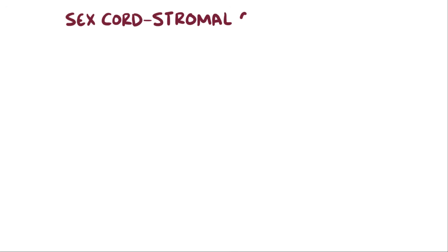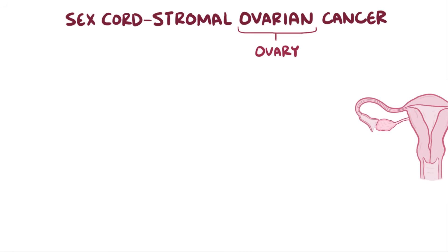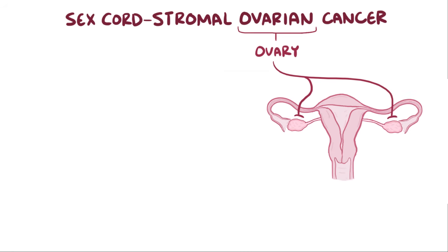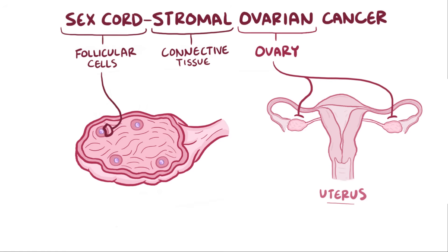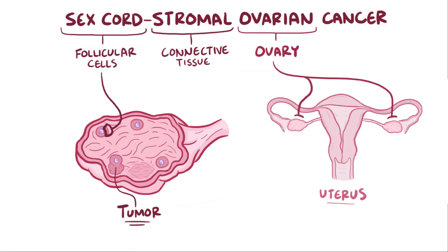With sex cord stromal ovarian cancer, ovarian refers to ovary, of which women have two that sit along either side of the uterus. The term sex cord refers to embryonic structures that develop into ovarian follicles, and stromal cells are the connective tissue of any organ. So a sex cord stromal ovarian cancer is a type of tumor that develops from either ovarian follicle cells or connective tissue cells.